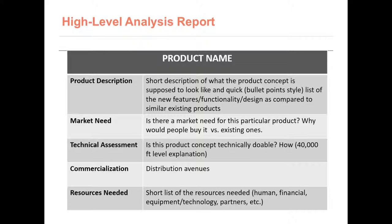After the analysis is done, produce a high-level analysis report that gives a brief summary of what the product does, the market it serves, how it is technically doable, how it will be distributed, and what kind of resources are needed — for example, money, people, technology, partners, regulatory, etc. The process outlined in these slides is not a groundbreaking process; it is used by most companies. It works well for small companies who want to keep things simple and spend more time developing cool products rather than filling out endless process forms. Start with these and keep modifying them as you develop your company, since your needs and processes will vary.